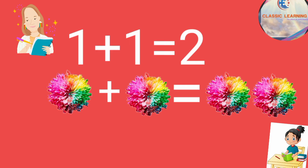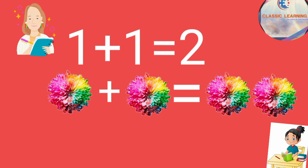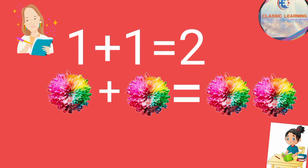First one: 1 plus 1 equals 2. Here we have 1 flower plus 1 flower, equals total flowers 2.